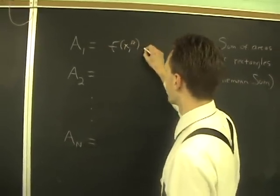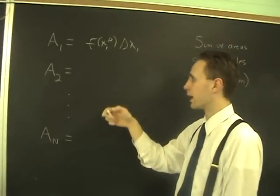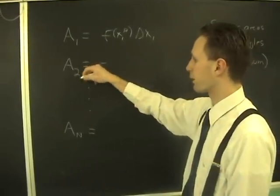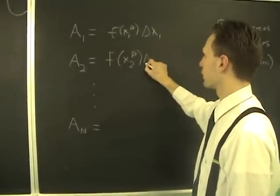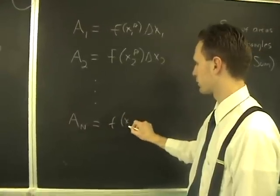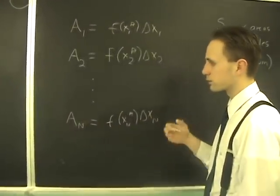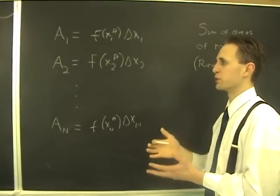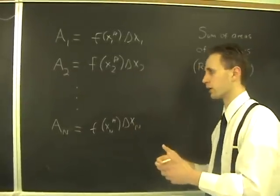It's no more difficult than base times height. The same for the second rectangle: the area is f of x2 star times delta x2, and so on, and you have f of xn star delta xn. Notice there's nothing in this that is very specific to the function or the interval a, b or any of that stuff—it's an extreme generality.